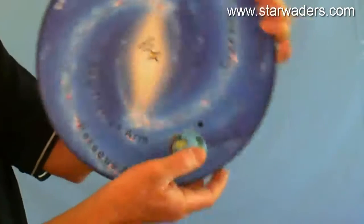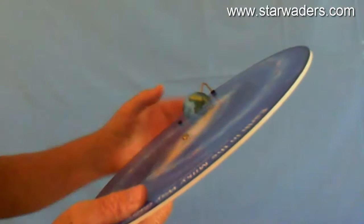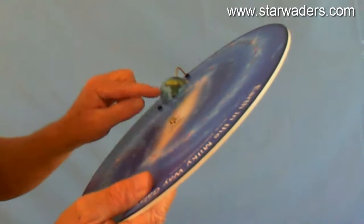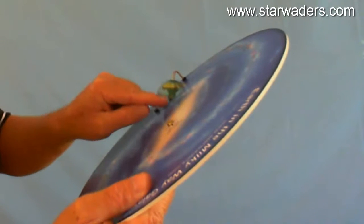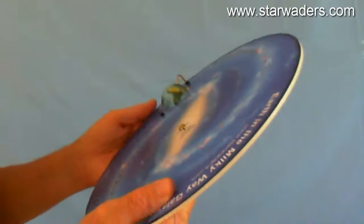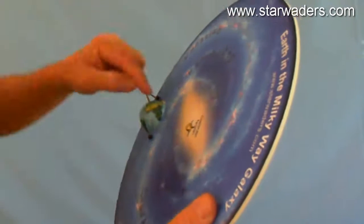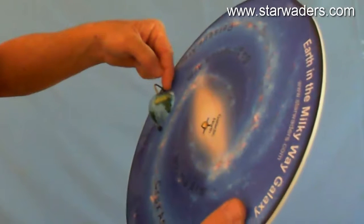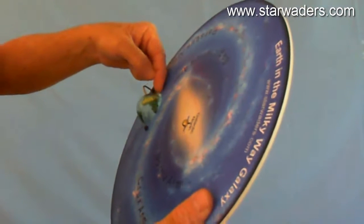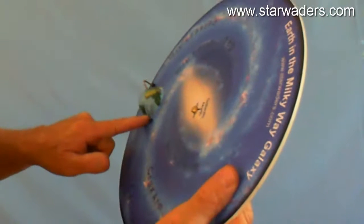If we first of all take the Earth, and we rotate the Earth, and this is of course what it does every day, it rotates once. And we rotate it to the position where Africa is looking in the direction of the center of the galaxy. And from this position we can see that the disk of the Milky Way extends from the northeast all the way through to the southwest.